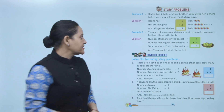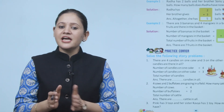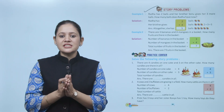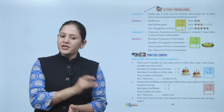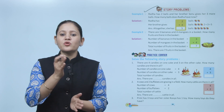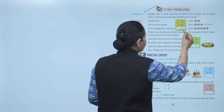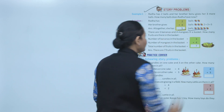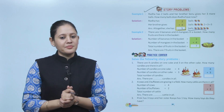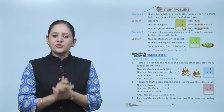Next are story problems. Rada has two balls and her brother Sonu gives her two more balls. Rada already had two balls and now has three more, so Rada has a total of five balls. Whenever the total is asked, you have to add the numbers.